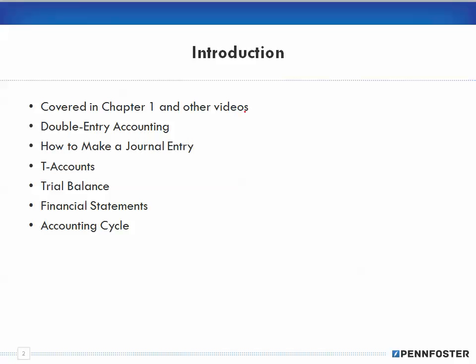What we're going to cover in these videos: what was in Chapter 1 is a repeat; we'll cover what double-entry accounting — or double-entry bookkeeping — is, meaning debits equaling credits and everything balancing out. We'll cover how to make a journal entry. Even though the textbook shows a step-by-step process, I think about it differently, and I'll present my thought process for making a journal entry more clearly in this series.